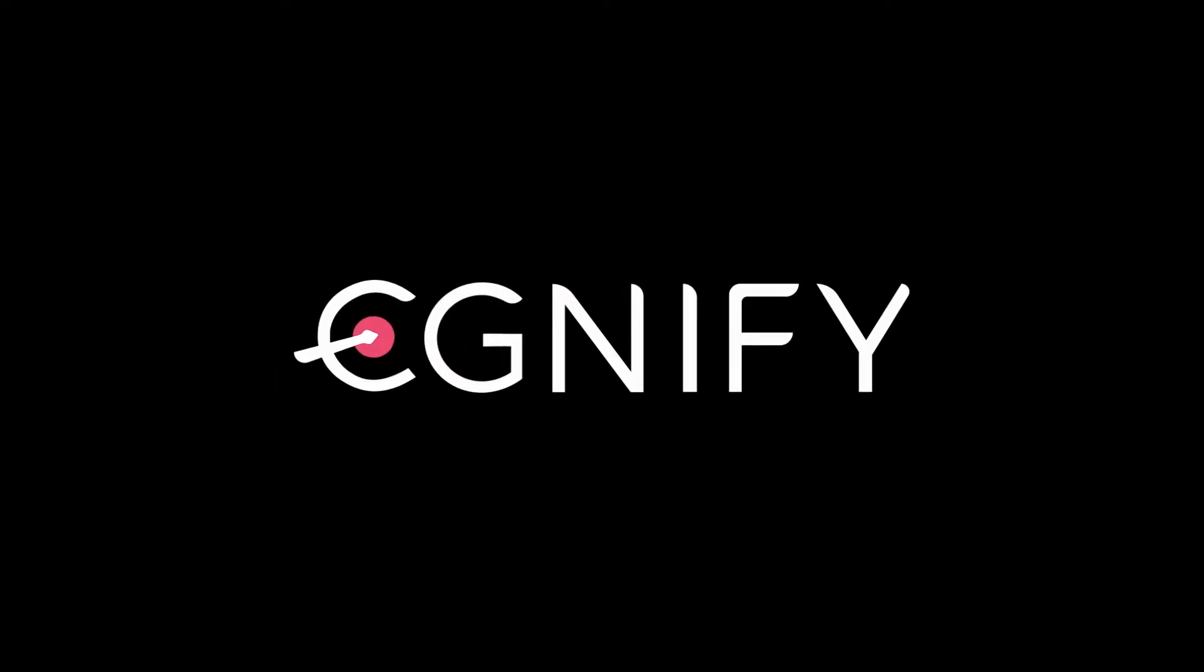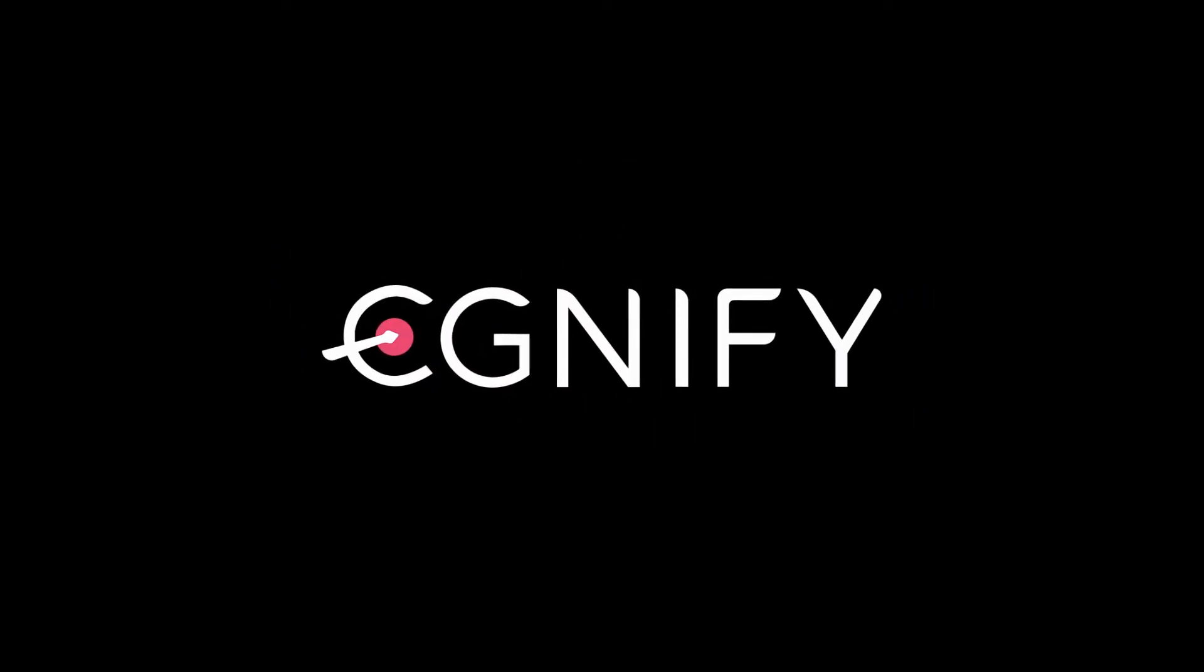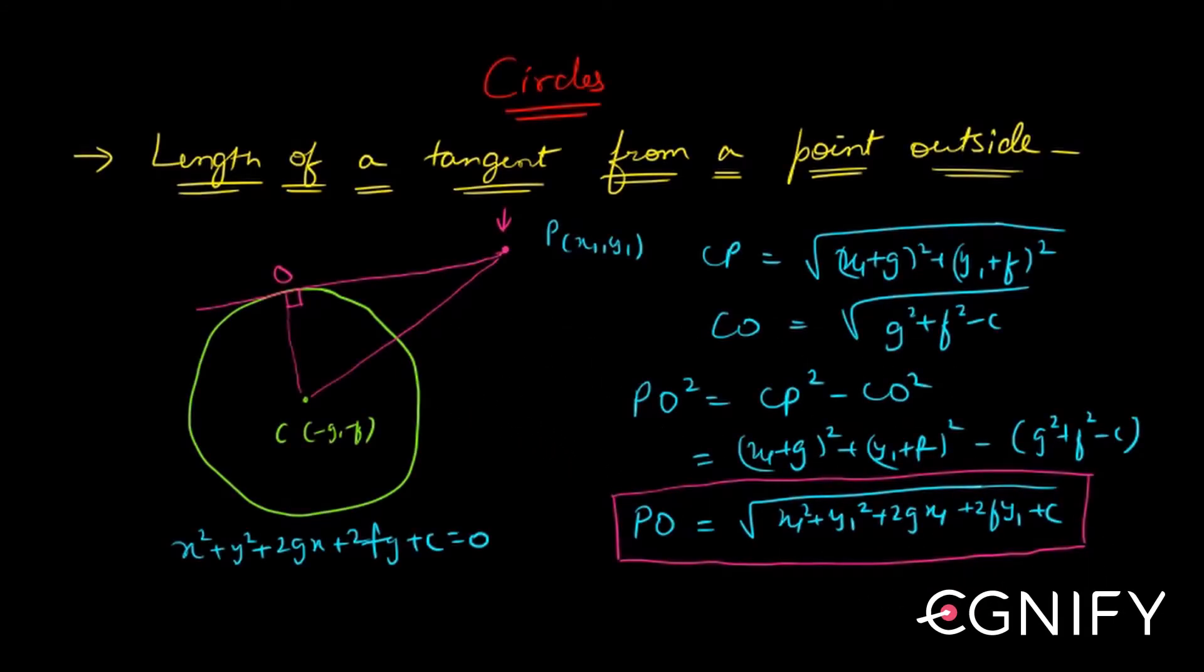Let's now look at the concept of the length of a tangent from a point outside. We've seen you have a point outside the circle and you have a tangent. How do you find the equation of the tangent? We've already seen that you take the equation of the tangent.